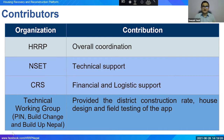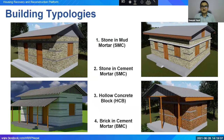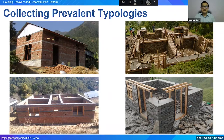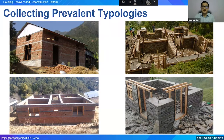The application features four different typologies: stone in mud mortar, stone in cement mortar, hollow concrete block, and brick in cement mortar — each with variations including with or without attic and with or without veranda. Housing typologies were collected based on available structures in the field. Photos were used to determine house dimensions, and detailed drawings were prepared from these.